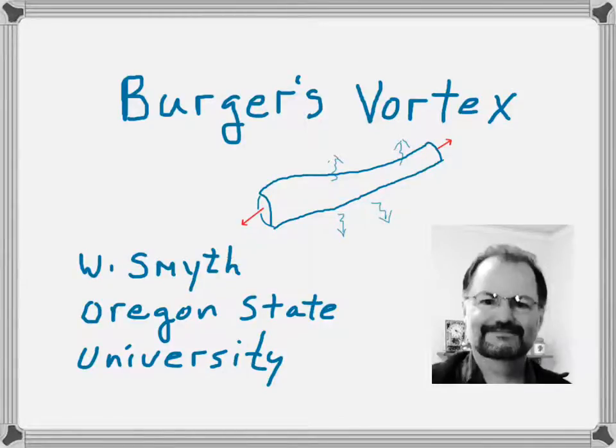This video is about Berger's Vortex. Berger's Vortex is a simple model for a common kind of vortex which is maintained by a balance between strain and viscosity. We have strain pulling on the vortex, stretching it, which amplifies the vorticity, and viscosity diffusing the vorticity away. If those two effects are in balance, then you have a steady vortex.